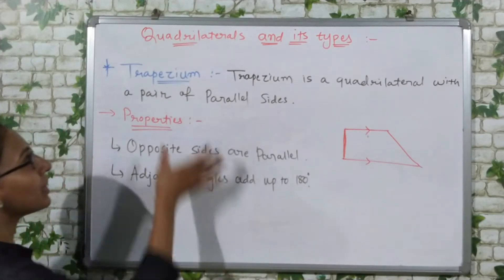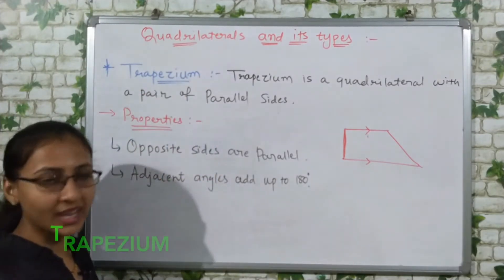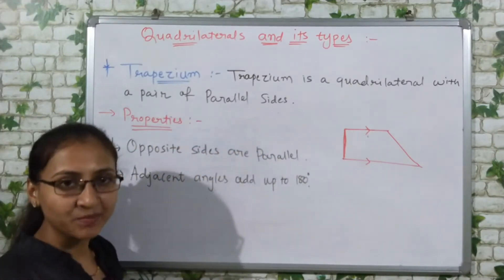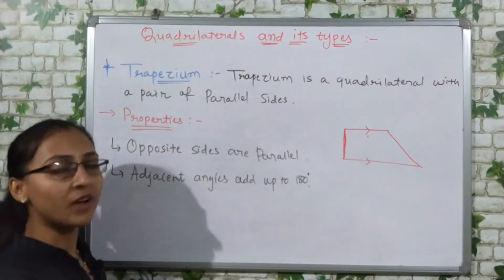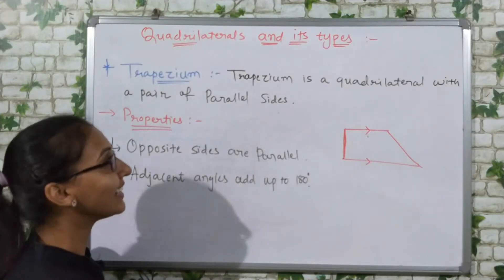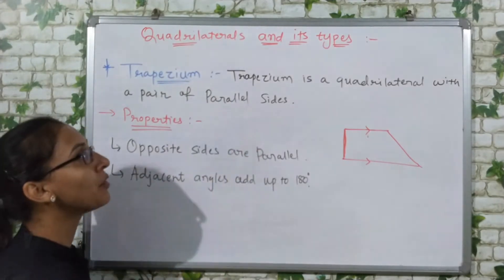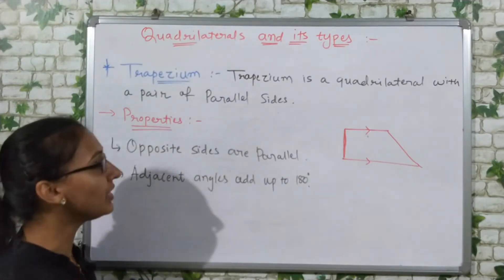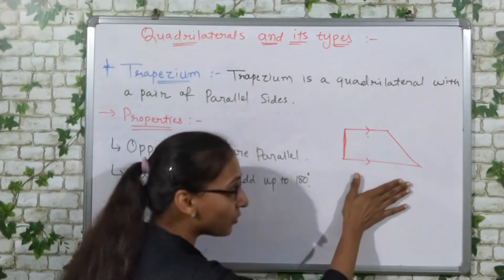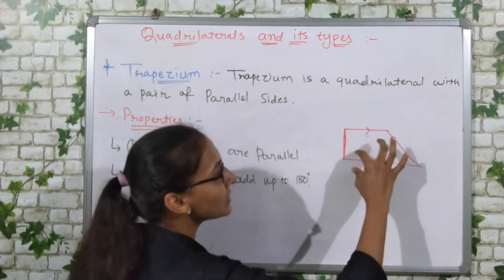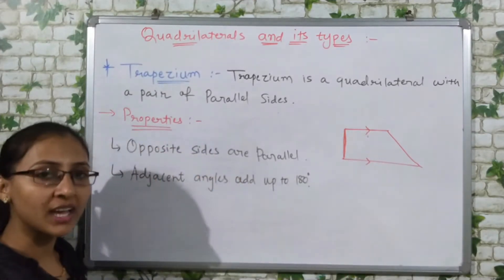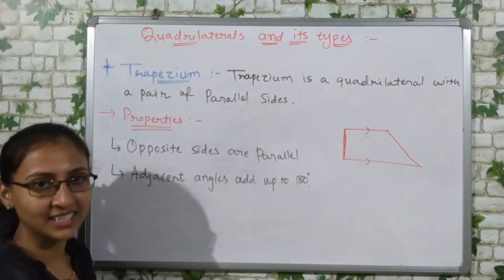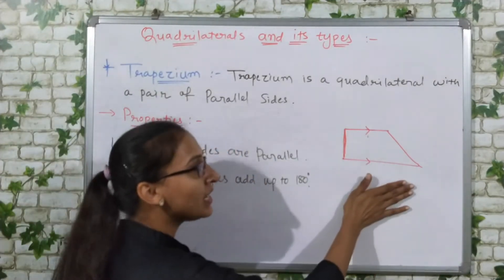First of all, we have trapezium. Trapezium is a quadrilateral with a pair of parallel sides. In a trapezium, you will find one pair of sides which will be parallel. Now looking at the figure drawn here, we have two sides which are parallel, and these two other sides are non-parallel sides. So this will be our trapezium.